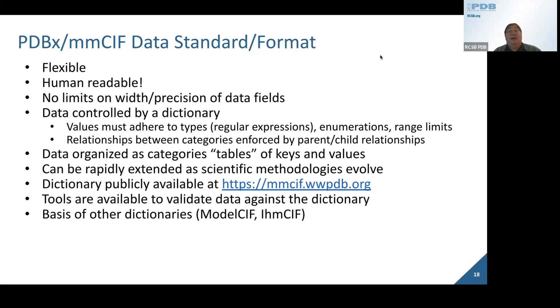The relationships between categories are enforced by what we call parent-child relationships. That allows you to have multiple values linked up to one other category. Think of a citation—you have a single citation, and you might have many authors.